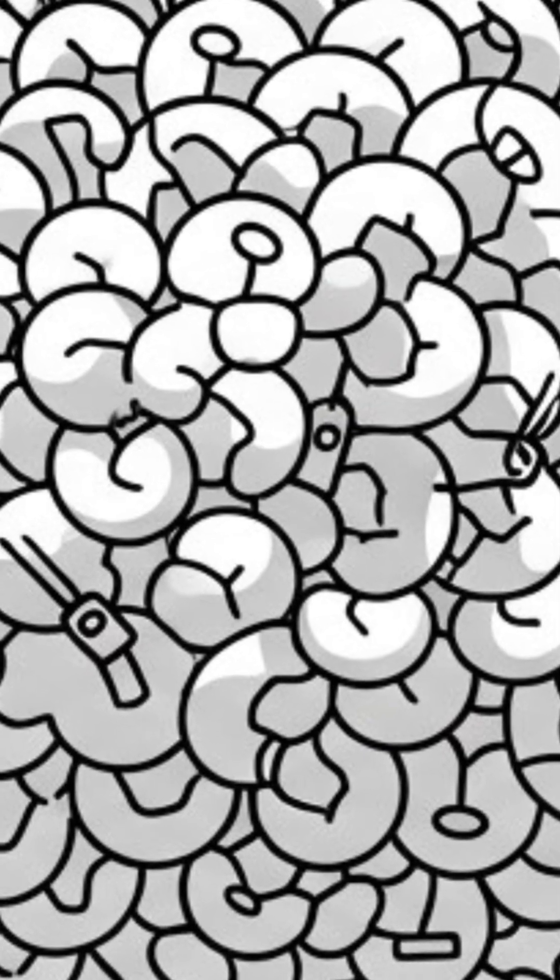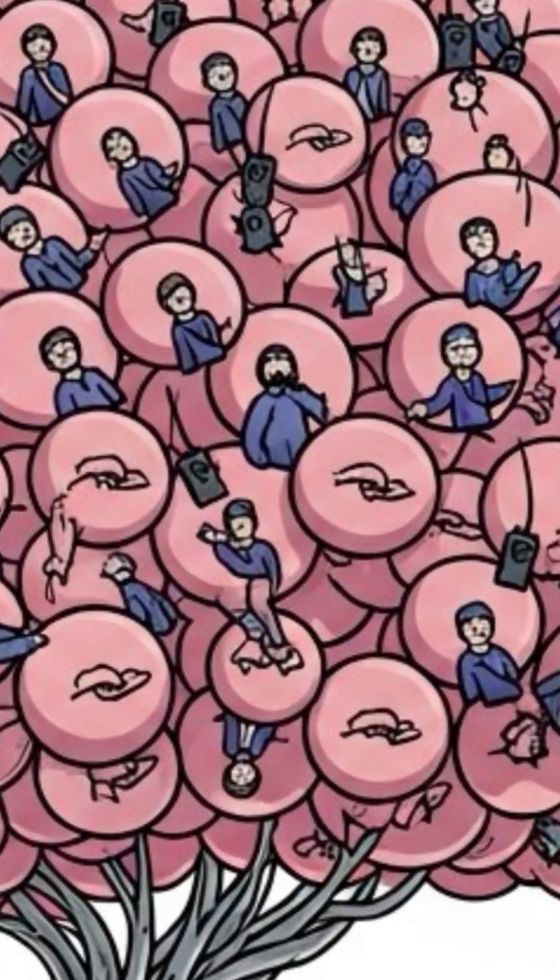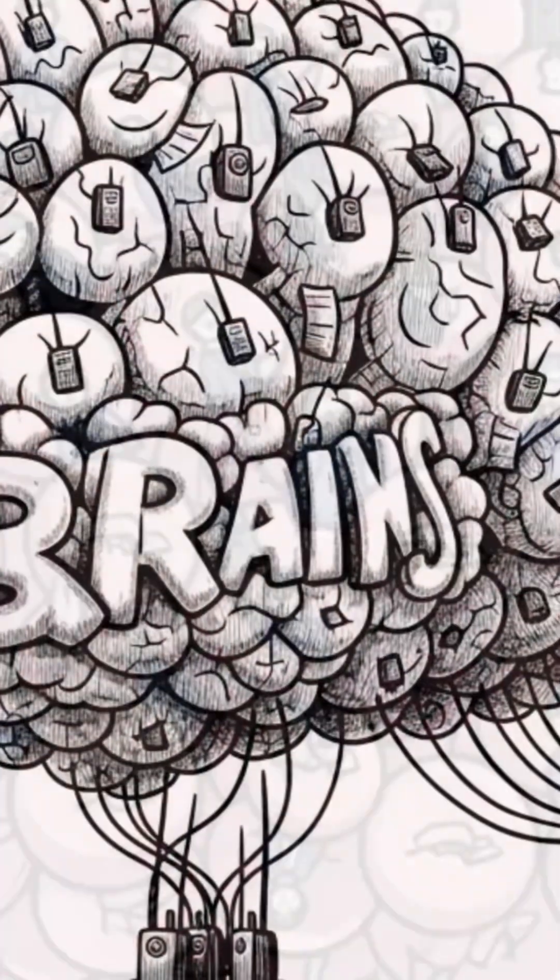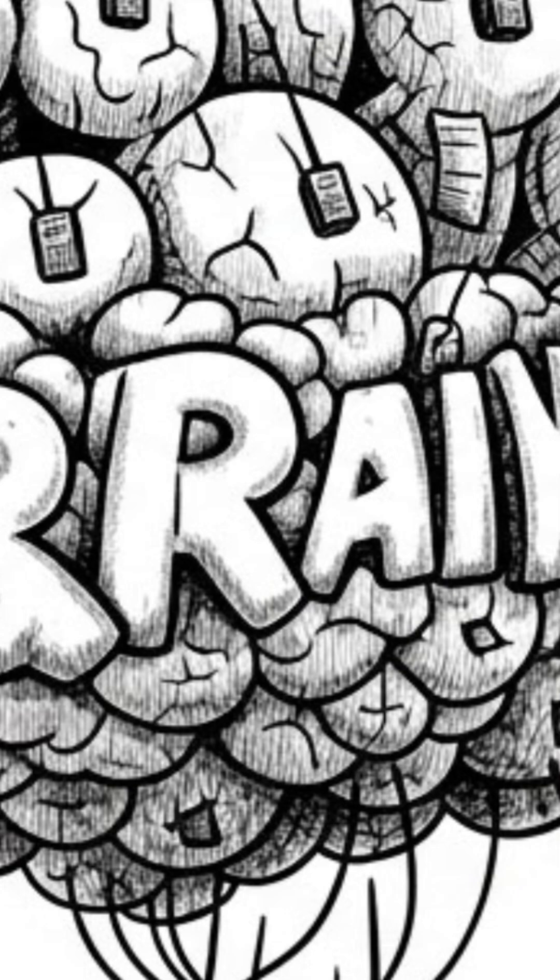Block argues that the China Brain is a clear counter-example to functionalism. He contends that while the system achieves functional equivalence—it acts like a brain—it suffers from a lack of phenomenal equivalence: it doesn't feel like a mind.